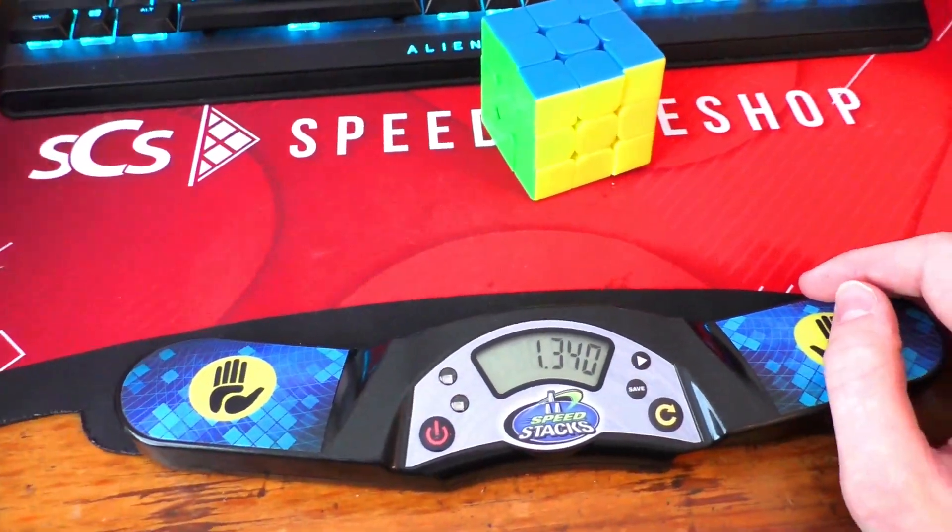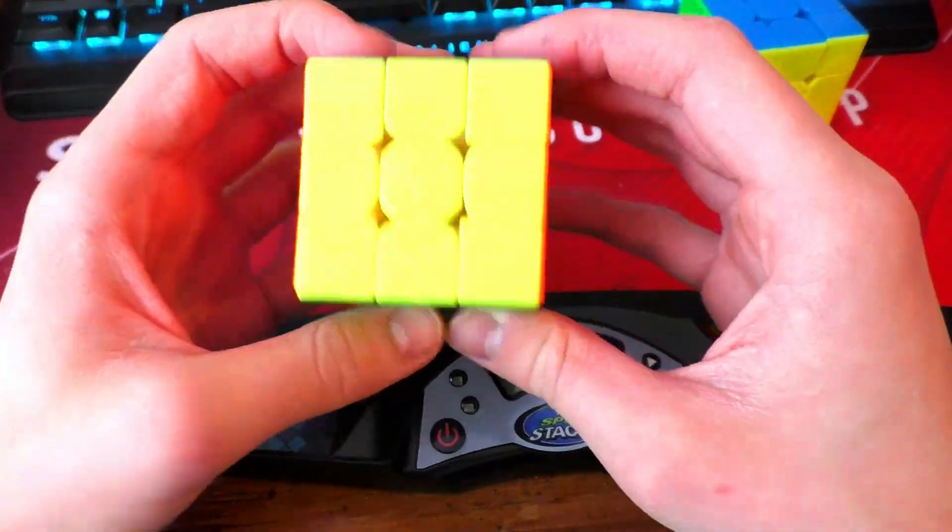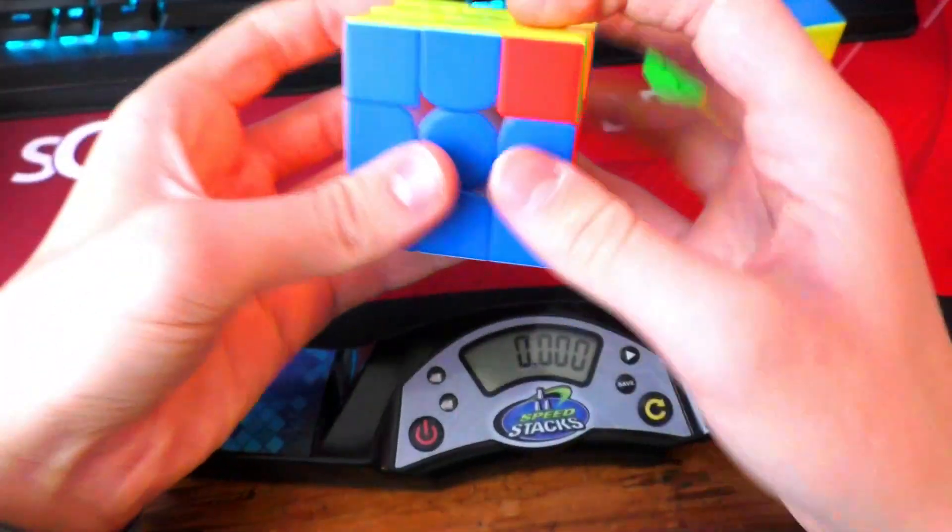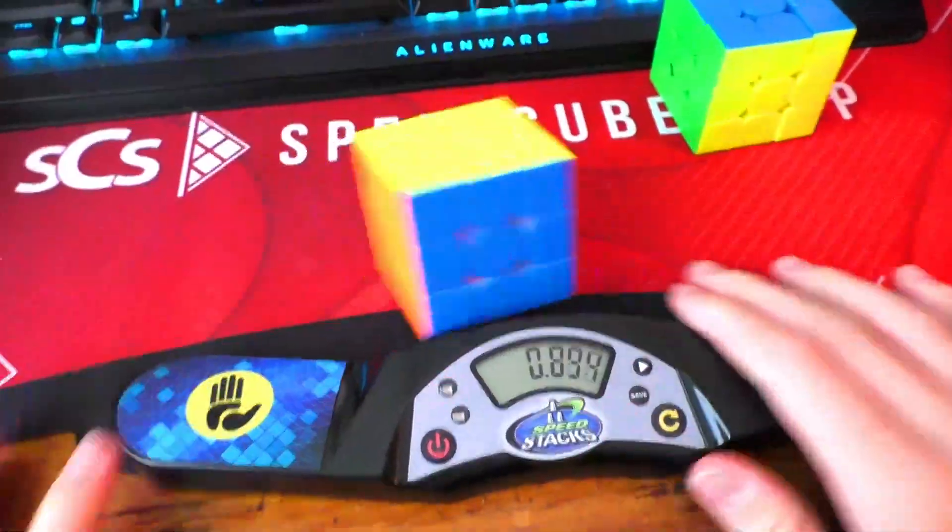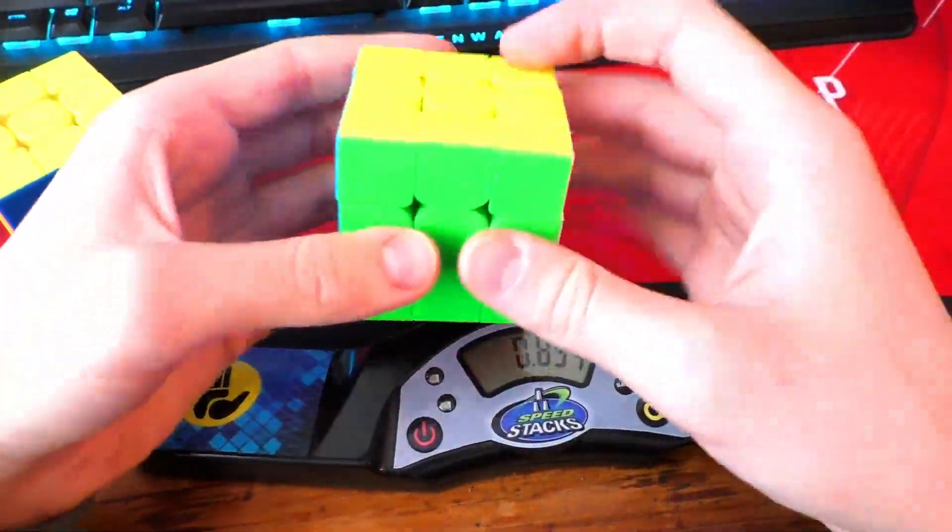Now let's try out the Gan 12 Maglev. There we go. Now let's try out the T perm on the Yushin. Let's go!